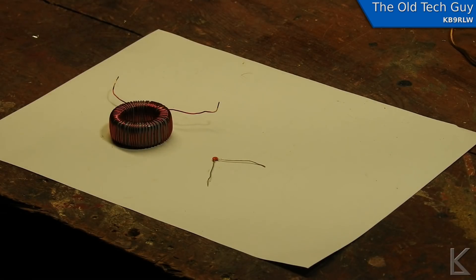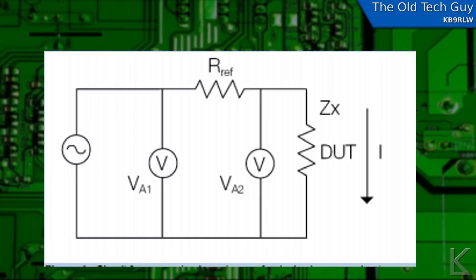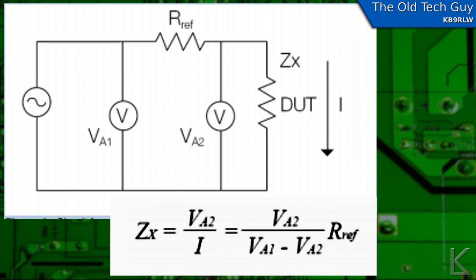Back to this test jig. The reference resistor is a known resistance — you need to measure it and know its value precisely. What you're basically setting up is a resistor divider network: you've got your unknown impedance on the device you're measuring and a known resistance, and you're going to measure the voltage drop across the known resistance. You take a voltage measurement on the input and the output of it, and once you've got that voltage drop you have all the information you need to calculate what the unknown impedance is.